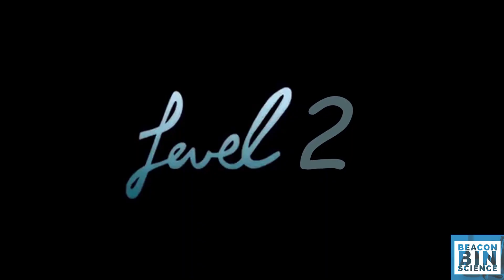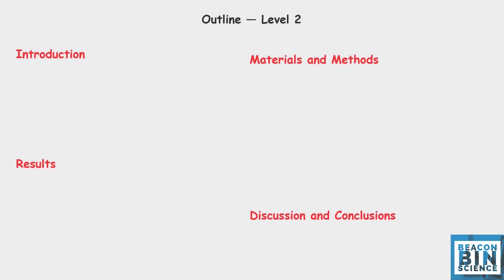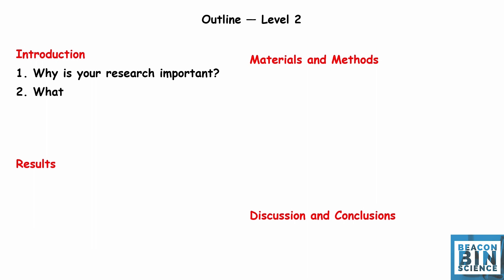Level two is nothing but elaborating on your Level 1 — expanding your outlines. The outline will contain four different points: one is introduction, second is materials and methods, third is results, and fourth is discussion and conclusion. Each point will have different sub-points. Let's go through them one by one.